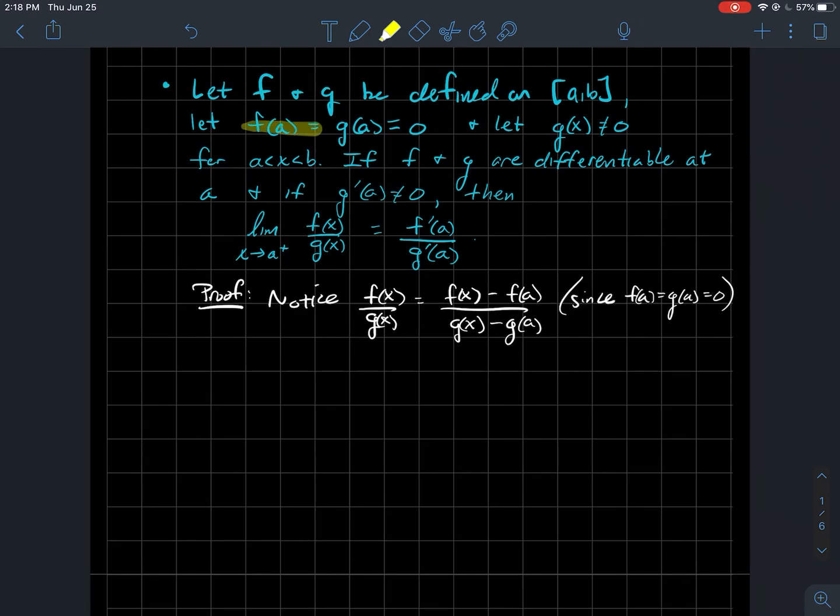And how come? Well, what did we assume? I assume that both f and g were zero at this point a that I care about. What do I mean that I care about? Well, this is the point that we're going to let x get close to in the limit.